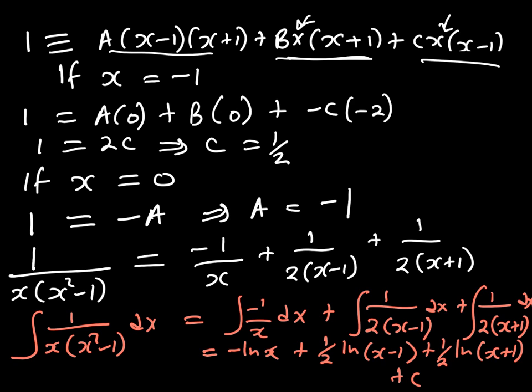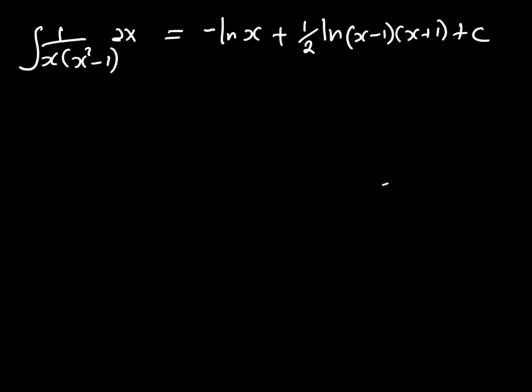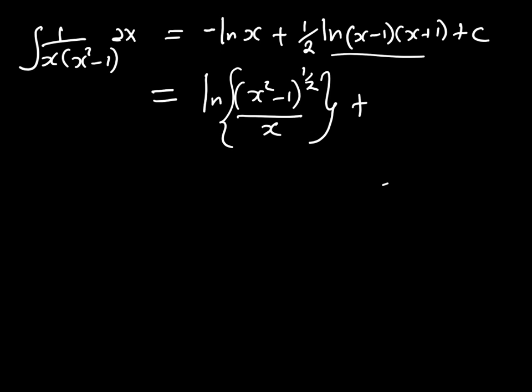We know about logarithm laws — adding logarithms means multiplying the arguments, and subtracting means dividing. Using those rules, we can write this as the natural logarithm of x squared minus 1 to the power half, divided by x, plus a constant of integration. That is the final simplified answer.